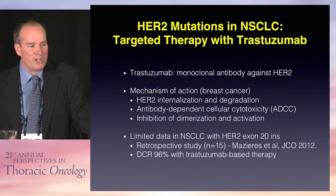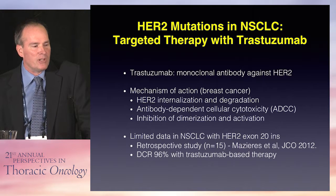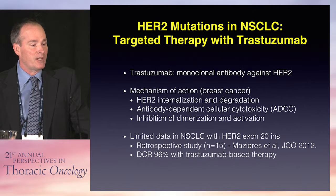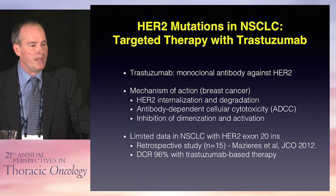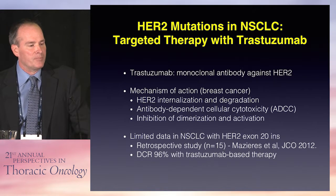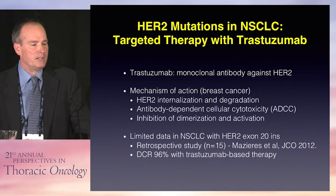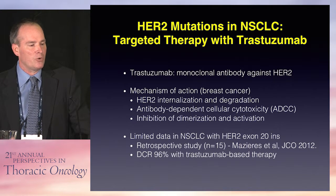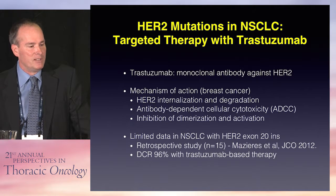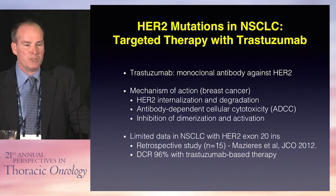There are some targeted therapies we can consider. Trastuzumab is the monoclonal antibody against HER2. In breast cancer, it works by HER2 internalization and degradation, antibody-dependent cellular cytotoxicity, and inhibition of HER2 dimerization. There is very limited data with trastuzumab in exon 20 insertion HER2 lung cancer — a retrospective study of about 15 patients showed a disease control rate of about 96%. So it certainly looks like there could be some potential there.